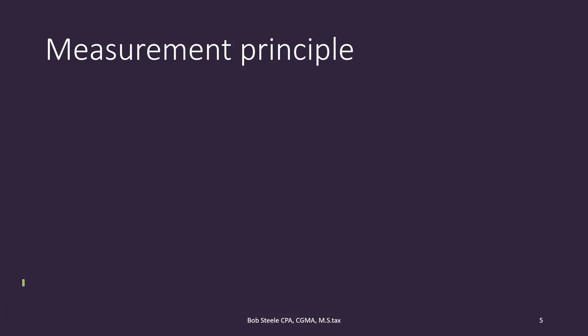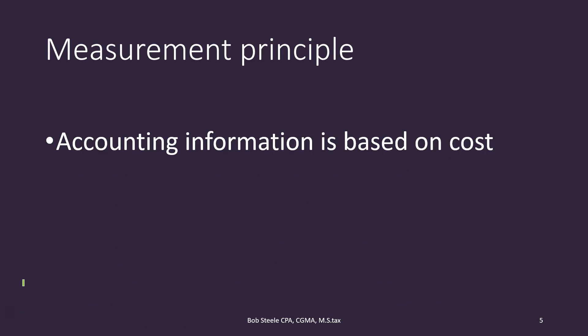Going into more detail: the measurement principle states that accounting information is based on cost. This may seem obvious at first, but it can be less clear with certain transactions. For example, if we have a building on our financial statements, how do we measure it? We could use an appraisal price, the purchase price, or the listed price. The answer is that we record it at cost. Why? What's the justification for that?